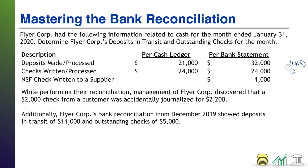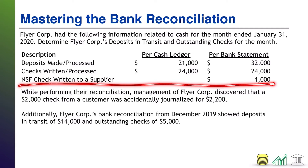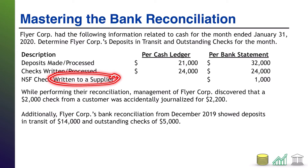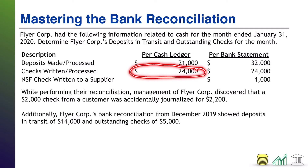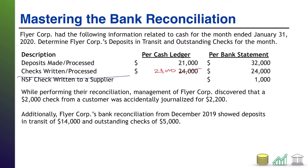Let's deal with the additional information, starting with the NSF check. NSF stands for non-sufficient funds — we wrote a check to a supplier but didn't have the funds to cover it, so the check bounced and never got processed. This matters because per our cash ledger we wrote 24,000 dollars in checks, but 1,000 of that was invalid. So we only really wrote 23,000 dollars in checks. That's how we use our first piece of information.